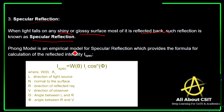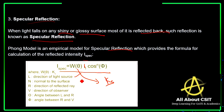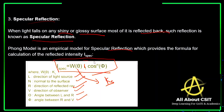The Phong model is an empirical model for specular reflection which provides a formula for calculating the reflected intensity: I_specular = w(θ) × Il × cos^n(φ), where w(θ) is ks, L is the direction of the light source, N is the normal to the surface, R is the direction of the reflected ray, and V is the direction of the observer. Theta is the angle between L and N, and phi is the angle between R and V.